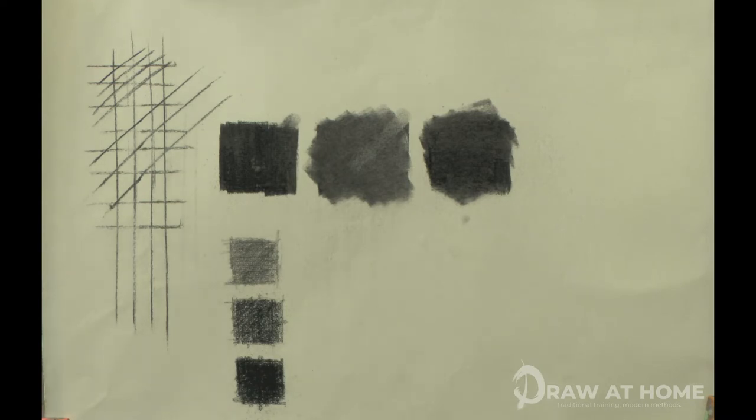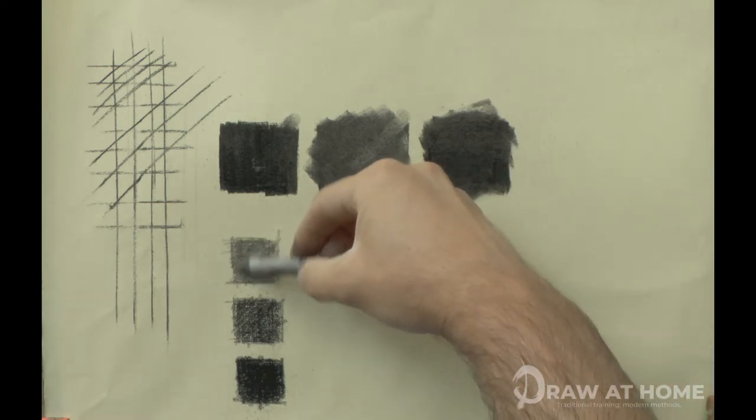Going over it with a stump helps unify the values created, giving an even tone across all three.